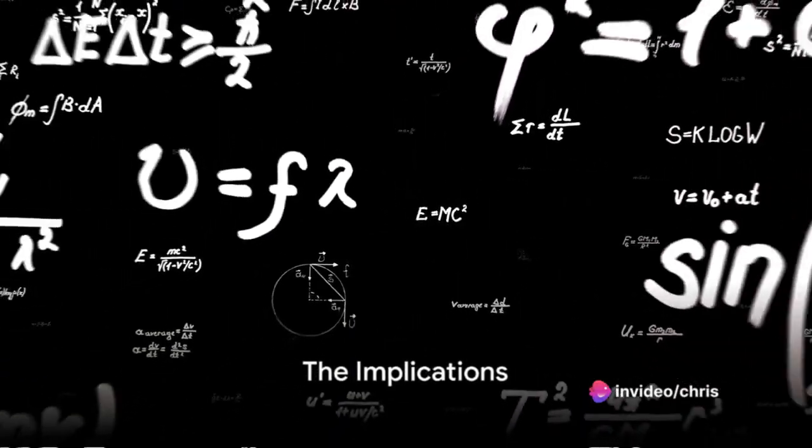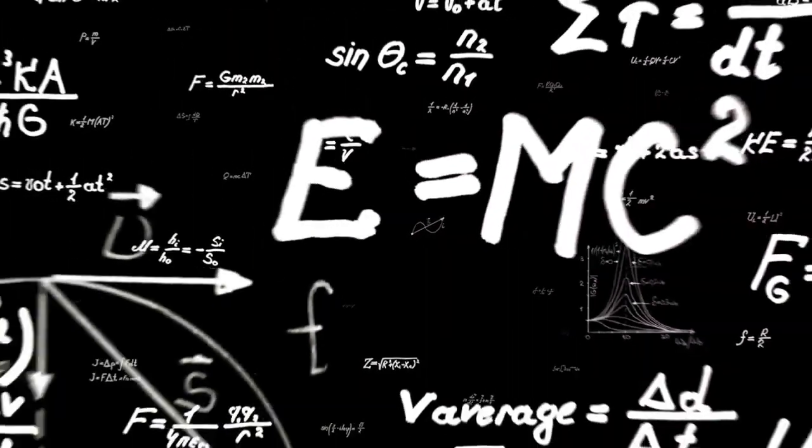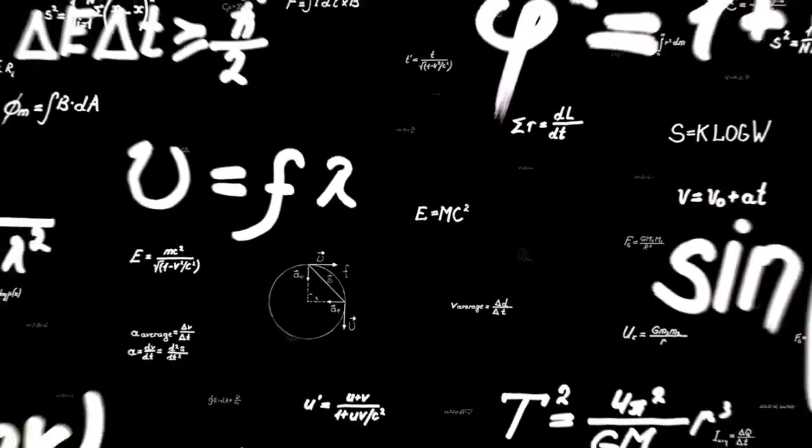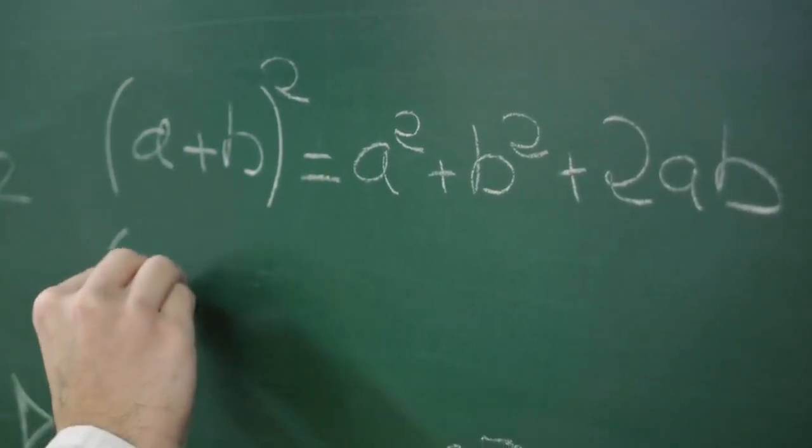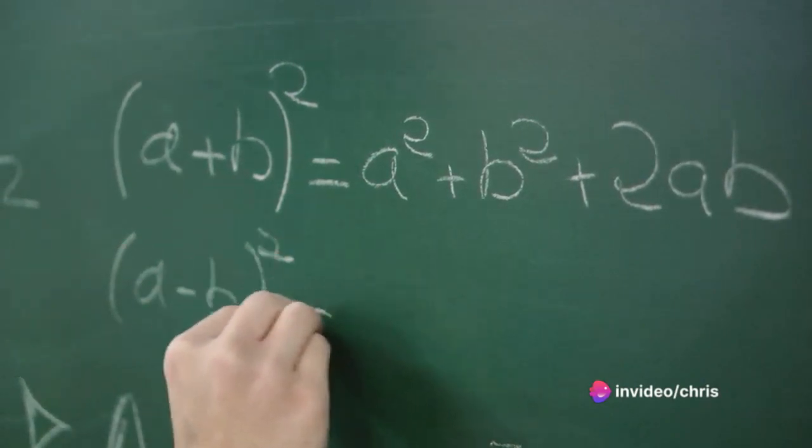In summary, the modified McGinty equation is a daring leap towards unifying two major pillars of physics: quantum mechanics and gravity. By refining the gravity term based on quantum gravity theories, it offers a potential step towards this ambitious goal.